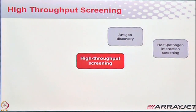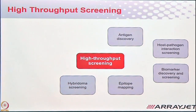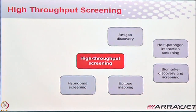High throughput screening applications we support include antibody discovery, host-pathogen interaction, biomarker discovery, epitope mapping, and hybridoma screening. For hybridoma screening, different lysates get printed on different slides, then your target antibody of interest is printed on top — creating a spot-on-spot assay where the entire interaction screening is done while it's getting printed.